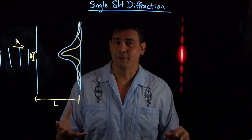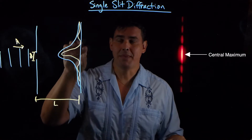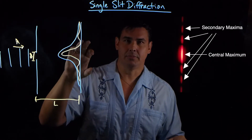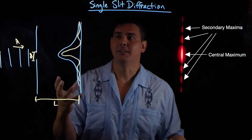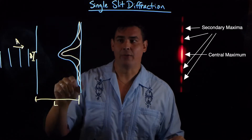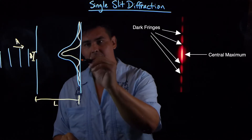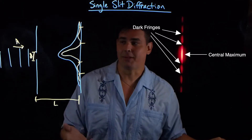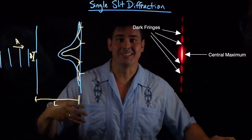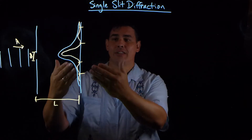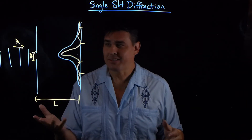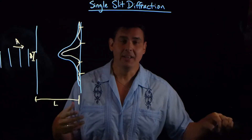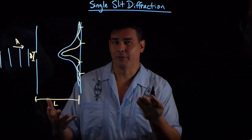So it looks different than a double slit. You have one big central maximum, and then you have a couple of less bright maximas further out. But you get dark spots here, and here, and here, and here — you're actually getting dark spots. So light going through a single slit is interfering with itself and showing up on that screen, which may seem kind of weird until you think about what's happening. So let's look at, like we talked about with double slits, how light interferes with itself.